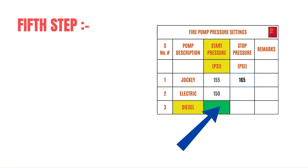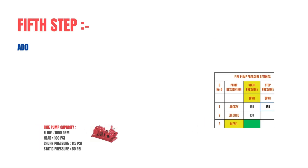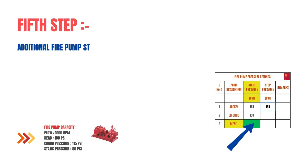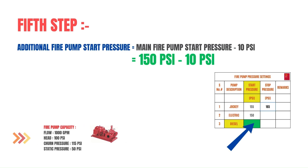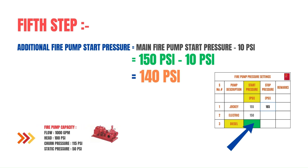The fifth step is calculating the start pressure for the diesel fire pump. If we have an additional fire pump, we reduce 10 psi from the main fire pump start pressure. As you can see on your screen, the additional fire pump start pressure equals the main fire pump start pressure minus 10 psi, giving us 140 psi.